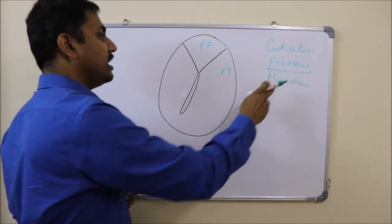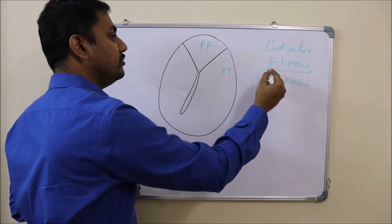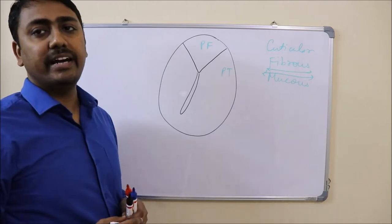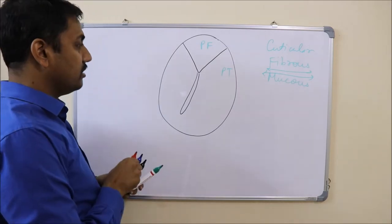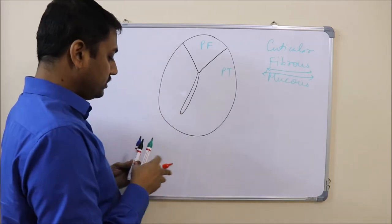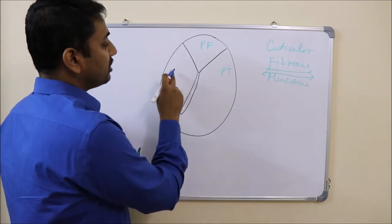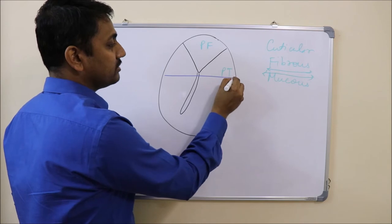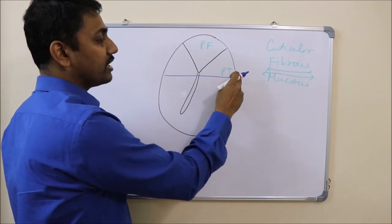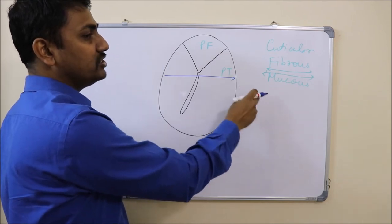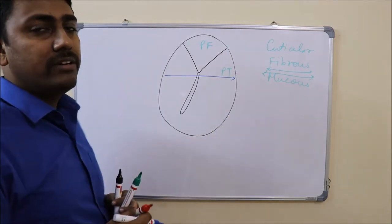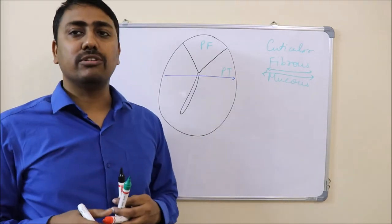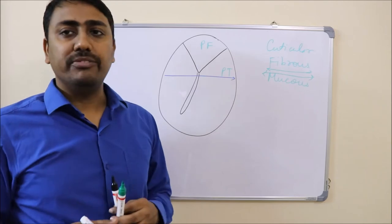Another important structure lying between the fibrous and the mucous layer is the chorda tympani nerve, which runs from the posterior aspect of the tympanic membrane to its anterior aspect. It comes out from the petrotympanic fissure, joins the lingual nerve, and carries taste sensations from the anterior two-thirds of the tongue.